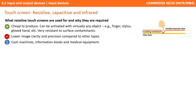Starting with resistive screens — they're cheap to produce and can be activated with virtually any object: a finger, stylus, or a gloved hand. They're very resistant to surface contaminants. However, they do have lower image clarity and precision compared to the other two types. You typically find resistive screens in use at cash machines, information kiosks, and medical equipment.